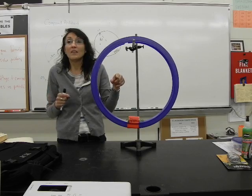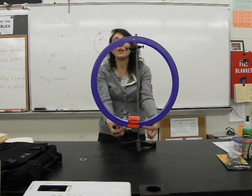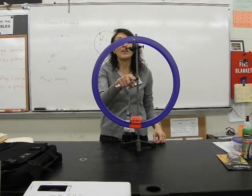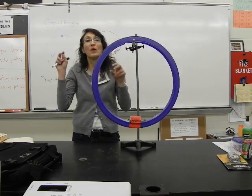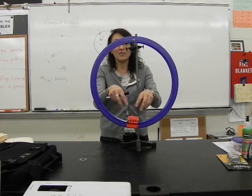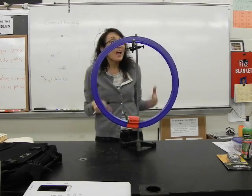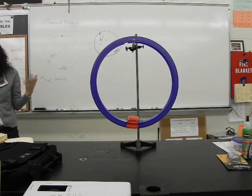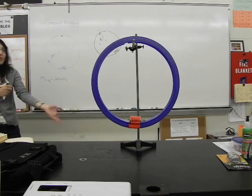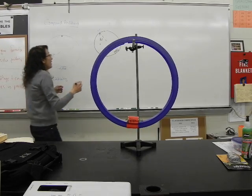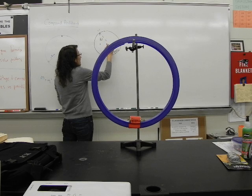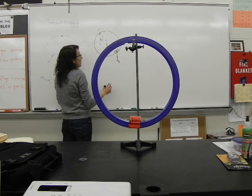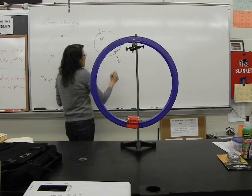Or we can draw two gravities, because we know where the center of mass is of the ring, right? Dead center. And we're going to assume this mass is like a point mass, so its center of mass is going to be right where it is. So I'm going to draw one gravity right here for the Fg of the ring and one right here for the Fg of the mass.